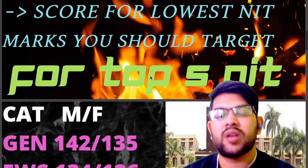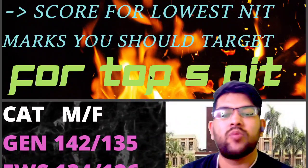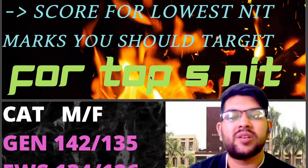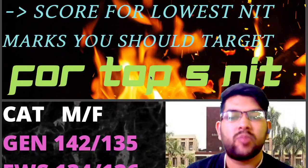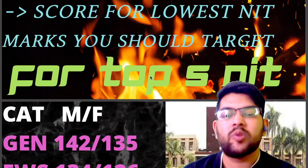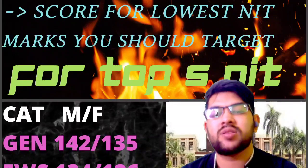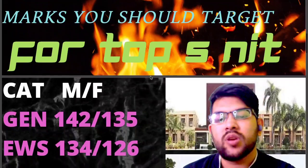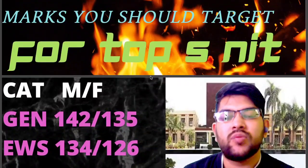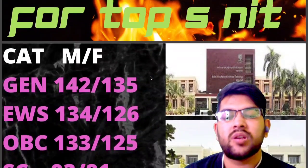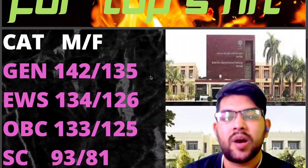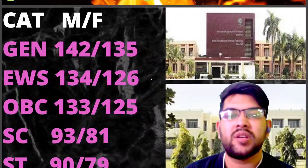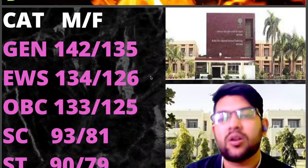For top 5 NITs, 142 and 135 marks will be required for General male and female respectively. I am considering a moderate difficulty level of the paper — it can be two marks above or below, but the cutoff will be around the same. For EWS it is 134 and 126 marks, for OBC 133 and 125 marks, for SC 93 and 81 marks, and for ST it is 90 and 79 marks.